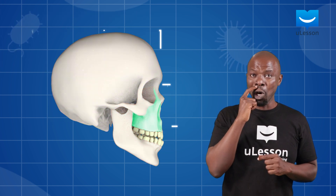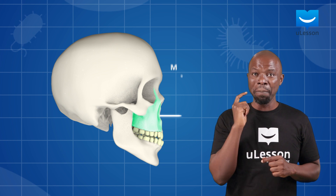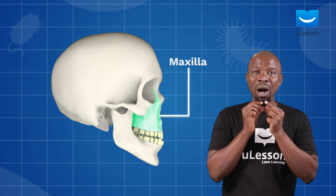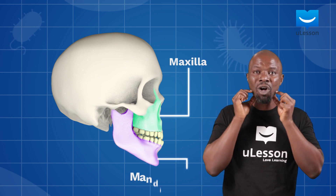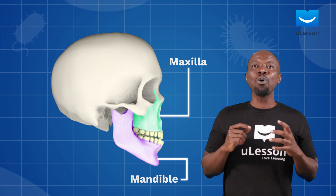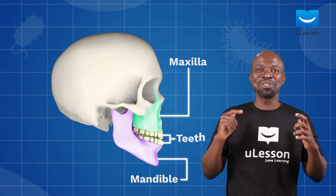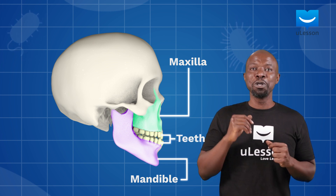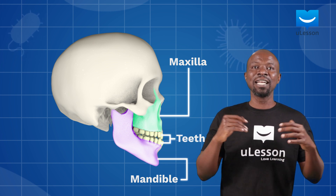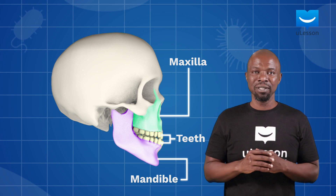The upper jaw is called the maxilla and the lower one is called the mandible. They both hold the teeth together that you use to cut, tear, and grind food.